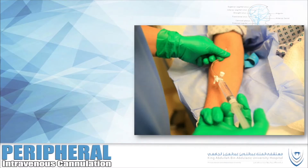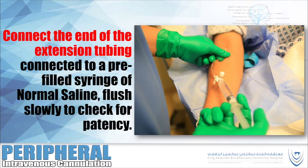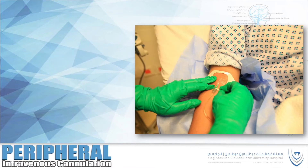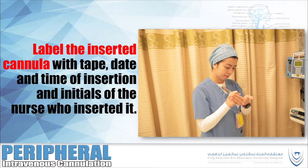Remove the eye sheet. Connect the end of the extension tubing connected to a pre-filled syringe of normal saline and flush slowly to check for patency. Connect the end of the extension tubing to prepare an intermittent IV device. Apply IV placement stabilization either with sterile tapes or a transparent semi-permeable membrane dressing. Label the inserted cannula with tape, date and time of insertion, and initials of the nurse who inserted it.